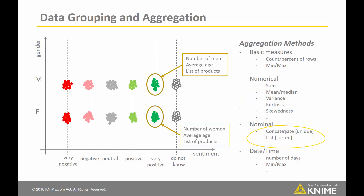A list of products bought by each group, the number of days between the first purchase date and the last purchase date, or many more.